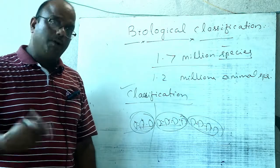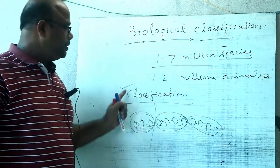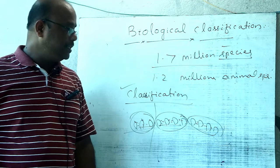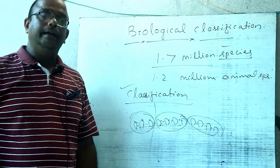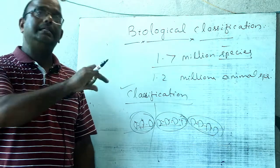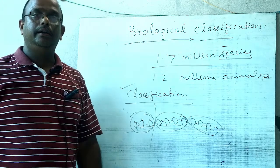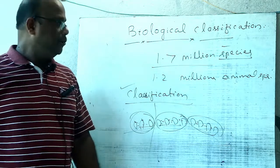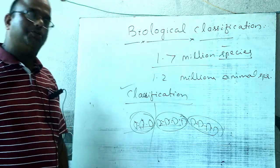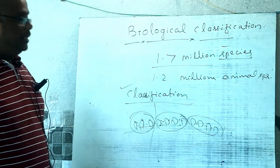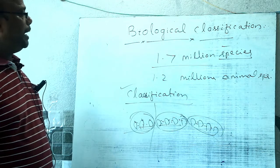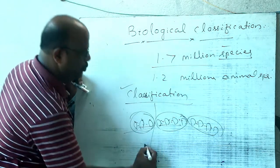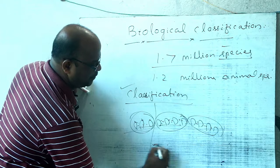The grouping of living organisms is called classification. There is a separate branch in biology, a separate discipline, which deals with the study of classification. That discipline is known as taxonomy.